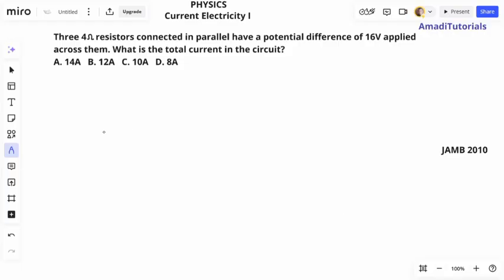Let me quickly take this question. Three 4-ohm resistors connected in parallel have a potential difference of 16 volts applied across them. What is the total current in the circuit?